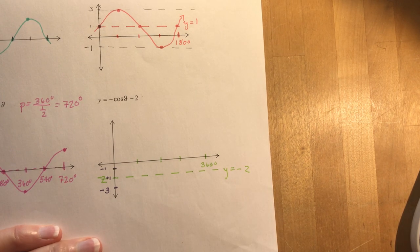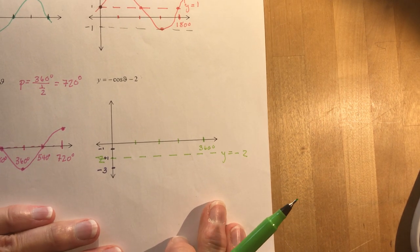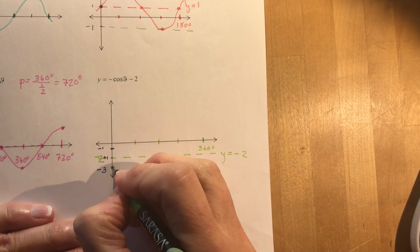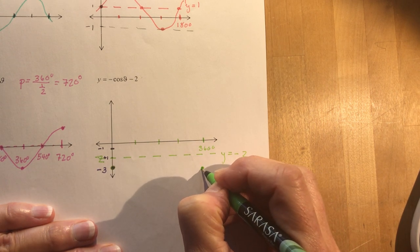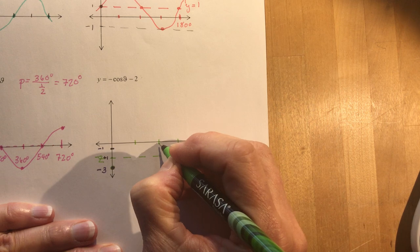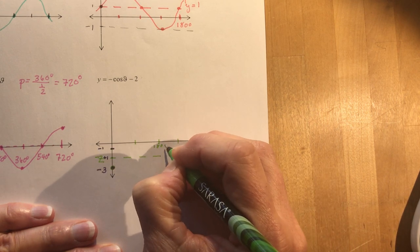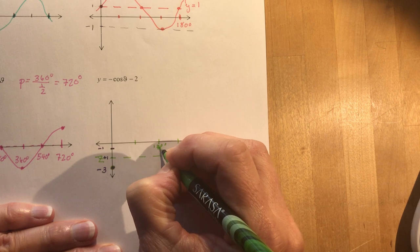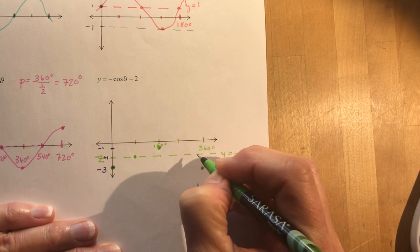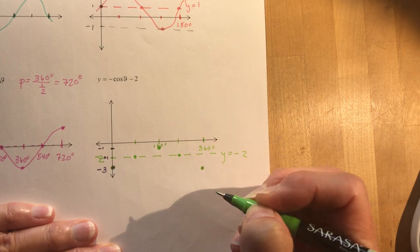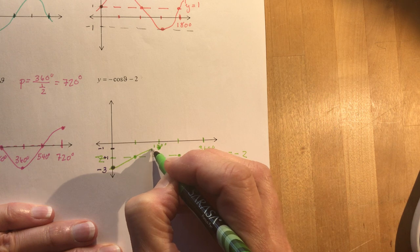So it's a negative cosine function. Negative cosine, remember up here we did the positive cosine, it starts at one. So this is going to start at the lowest point. So again when you sketch these, just think it's cosine, so I start and end at the same height. So I'm starting at minus three, I'm going to end at minus three.